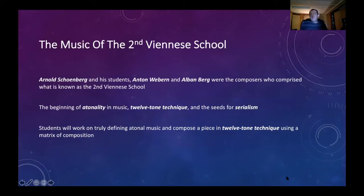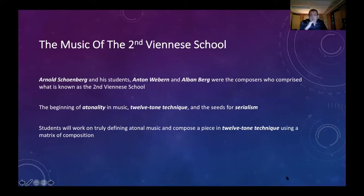Next we'll talk about the music of the second Viennese school. The first Viennese school consisted of the famous classical composers of the Classical period: Haydn, Mozart, and Beethoven. Then, jumping ahead about a hundred years, we see the music of the second Viennese school — Arnold Schoenberg and his students Anton Webern and Alban Berg — the composers who comprised what is now known as the second Viennese school.